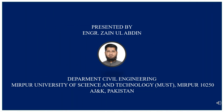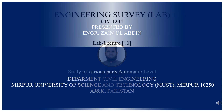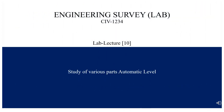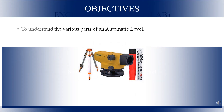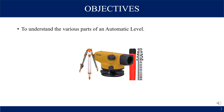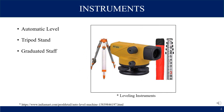Hi everyone, welcome to Engineering Survey Lab. Today I will discuss the study of various parts of an automatic level. The main objective of this practical is to understand the various parts of an automatic level. The instruments used are: automatic level, tripod stand, and graduated staff.